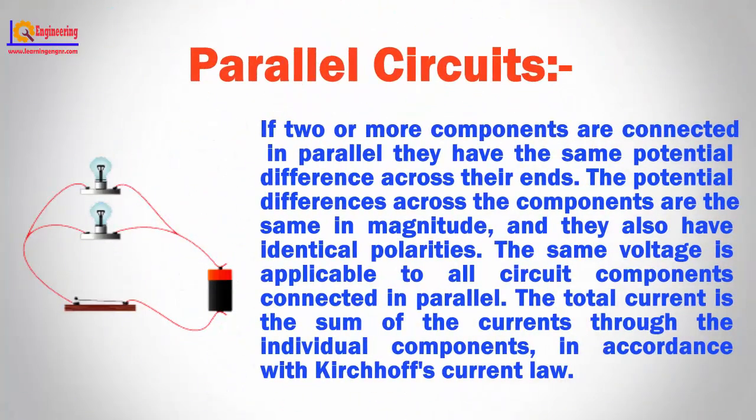Parallel circuits. If two or more components are connected in parallel they have the same potential difference across their ends. The potential differences across the components are the same in magnitude and they also have identical polarities. The same voltage is applicable to all circuit components connected in parallel. The total current is the sum of the currents through the individual components in accordance with Kirchhoff's current law.